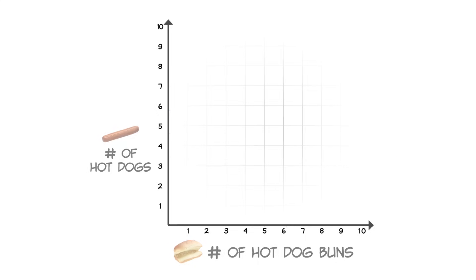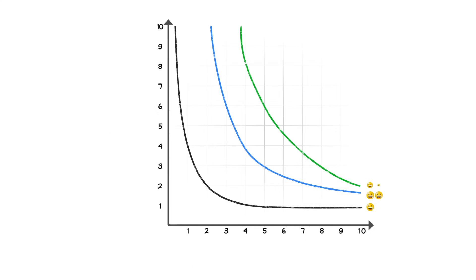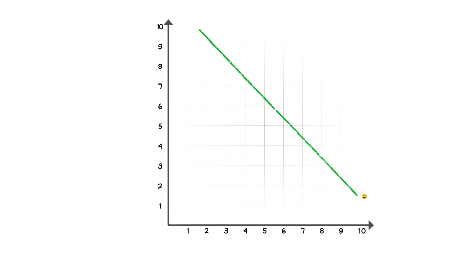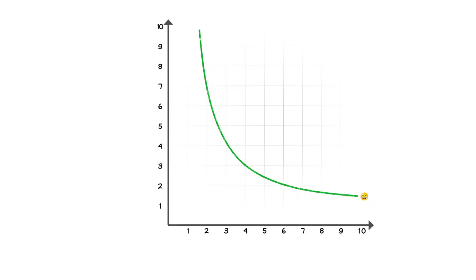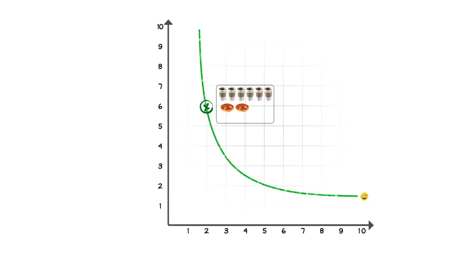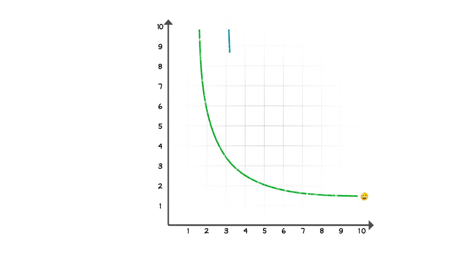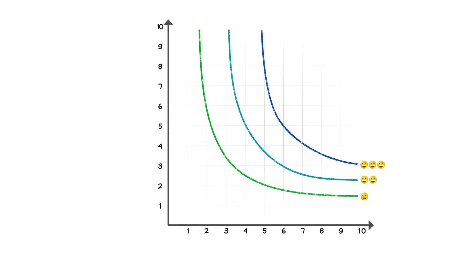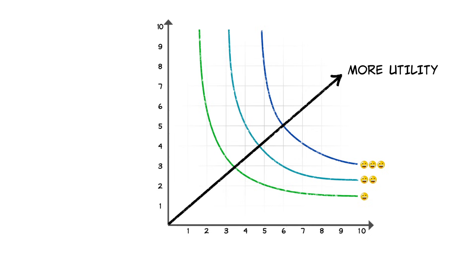Indifference curves come in many shapes and sizes, but they do have a few things in common. When we talk about goods, the first thing you note is that indifference curves slope downward — because the only way to keep utility constant when consuming more of one good is by consuming less of the other. We also assume that more is better, meaning indifference curves that are farther to the right represent higher levels of utility.